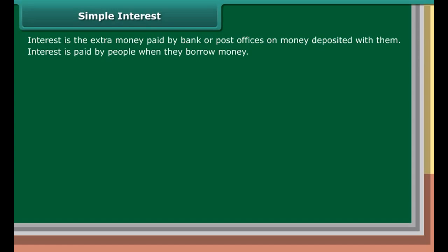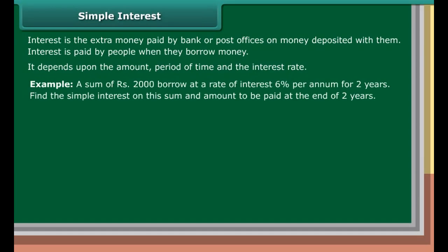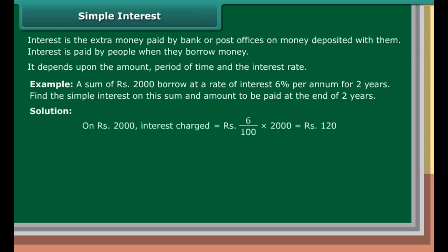Finding value-added tax. Rina bought a washing machine for rupees 9,800 including a tax of 10%. Find the price of the washing machine before VAT was added. Including VAT, price of washing machine is rupees 9,800. 10% of 9,800 is equal to rupees 980. Price before VAT was added equals 9,800 minus 980, which equals rupees 8,820.